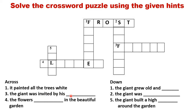Now look at number three. It says: the giant was invited by his blank. Who invited the giant — his mother? His father? No, then who invited the giant? Yes, he was invited by his friend. Very good. The spelling of friend — F is already written for you, so quickly write the rest of the letters.